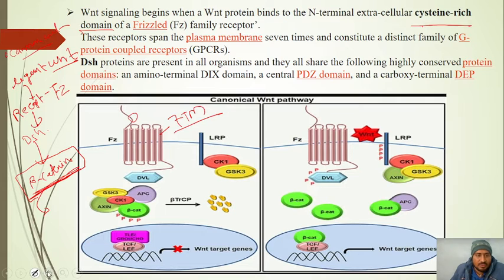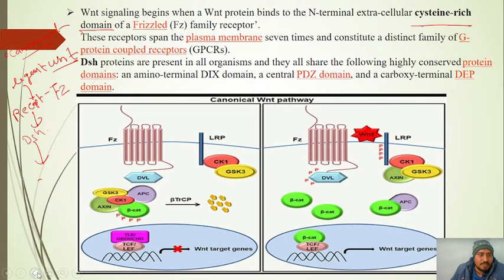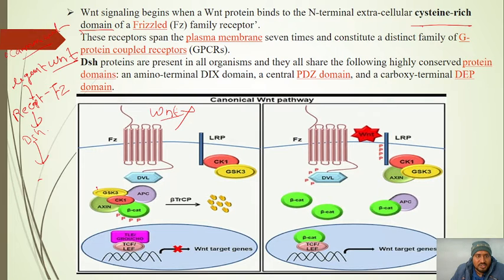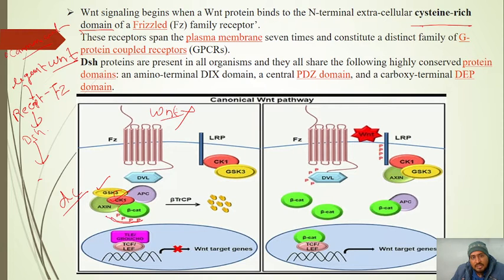When WNT is not present (WNT OFF state), the Frizzled receptor is not activated. In this state, beta-catenin in the cytosol is bound by a destruction complex. GSK3 and CK1 phosphorylate beta-catenin. Together with APC and Axin, they form the destruction complex, leading to the proteasomal degradation of beta-catenin.